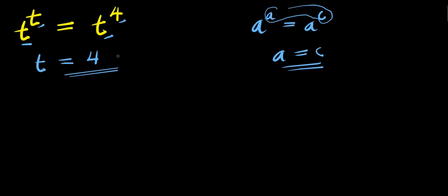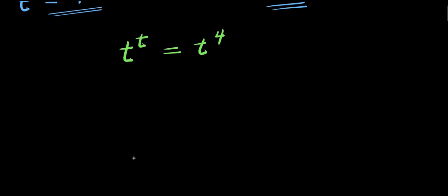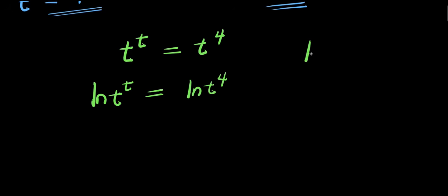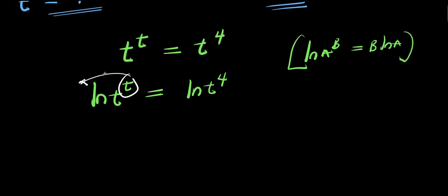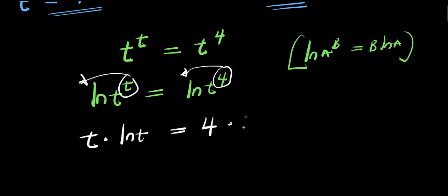That is just one of the solutions — there are other solutions for this exponential problem. We have t to the power of t equals t to the power of 4, and we are solving for all values of t. Let's make use of the natural log. We have ln of t to the power of t equals ln of t to the power of 4. Using the rule that ln of a to the power of b equals b times ln of a, the t comes in front on the left and the 4 on the right.